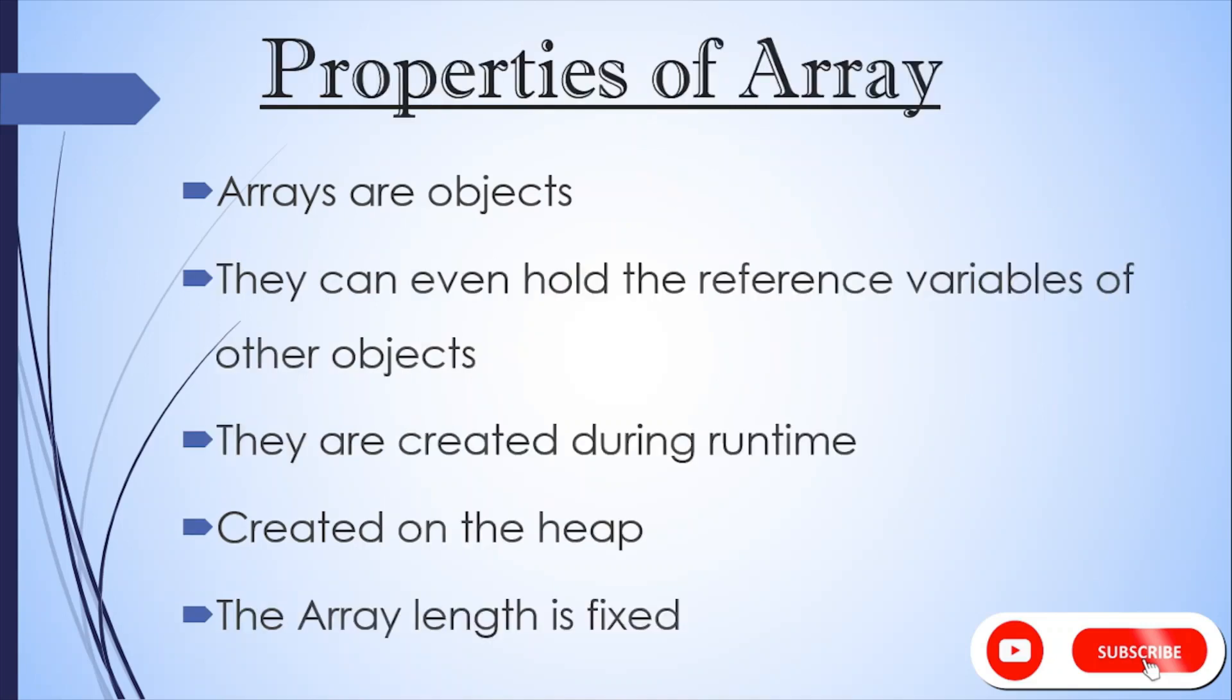Let's see a few properties of array. Arrays are objects. They can hold the reference variables of the other objects as well, which will point to the memory location in heap. They are created during runtime and as they are objects, they are created on heap itself. They are having a fixed length.